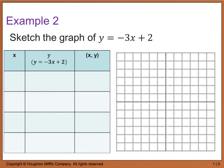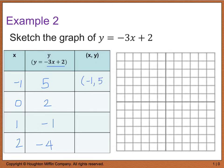I'm going to pick a few arbitrary points: x equals negative 1, 0, 1, and 2. Plugging negative 1 in gives 5; plugging 0 in gives 2; plugging 1 in gives negative 1; and plugging 2 in gives negative 4. So our coordinate pairs are negative 1 comma 5, 0 comma 2, 1 comma negative 1, and 2 comma negative 4, which I'll now plot on the graph.